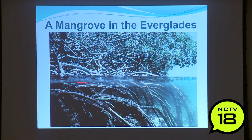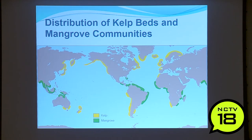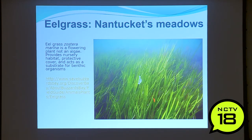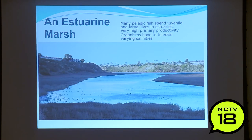Here's a traditional kelp with its gas bladder, blade, holdfast, and stipe. Here's a mangrove — a benthic plant that can maintain itself underwater — in the Everglades. Here's the distribution of kelp beds and mangrove communities around the world, mostly in warm areas near upwelling or high nutrients. Eelgrass, Zostera marina, is a flowering plant — not an algae — one of the most interesting plants in the world and we have it right here. It can reproduce through budding, cloning, and vegetative growth, and also through flowering — an underwater flowering plant.